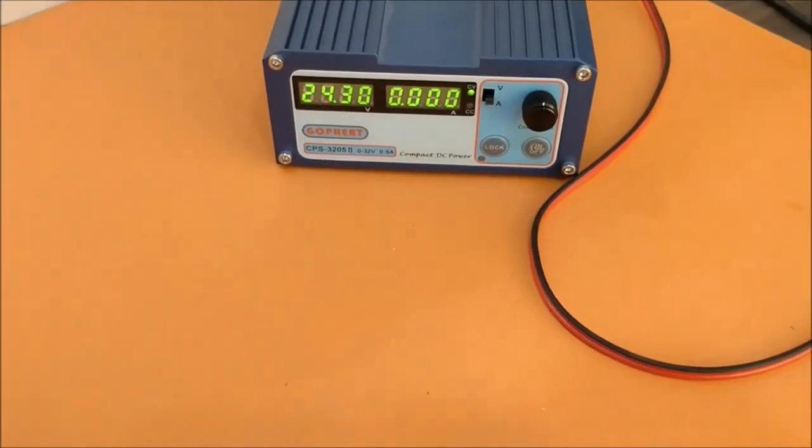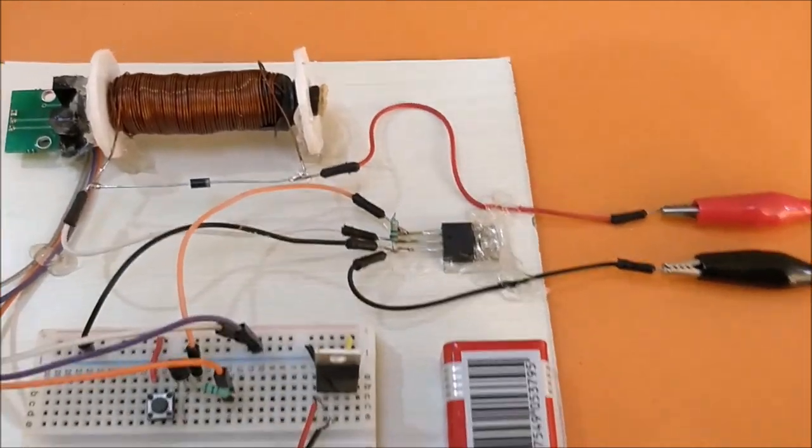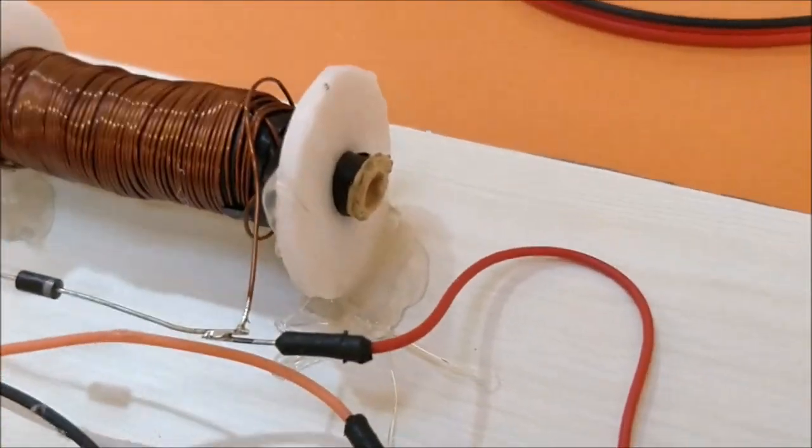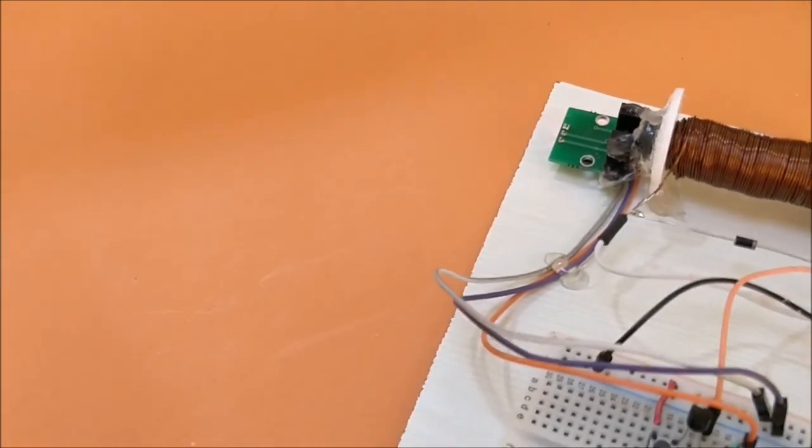So right now we have, as you can see, the RPS is connected to the coil through the MOSFET, and the coil has a hollow tube inside which could hold some projectiles.